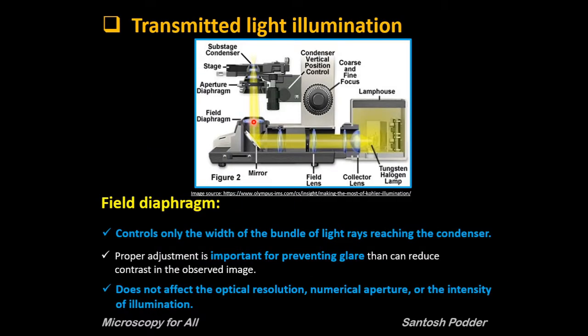The field diaphragm at the base of the microscope controls only the width of the bundle of light rays reaching the condenser. Proper adjustment is important for preventing glare that can reduce contrast in the observed image. If you open the field diaphragm too far, scattered light originating from the specimen will degrade image quality. The elimination of excess light is very important, particularly for samples with inherently low contrast.